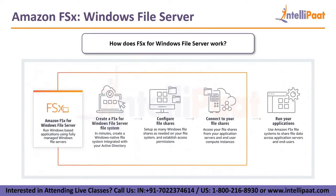How does it work? It's pretty simple. First, you create your FSX file system in AWS. Once done, you configure it with Windows. Once connected, you can access your file shares from your application servers and end-user compute instances. You can run your applications and use Amazon FSX file systems to share file data across application servers and end users.